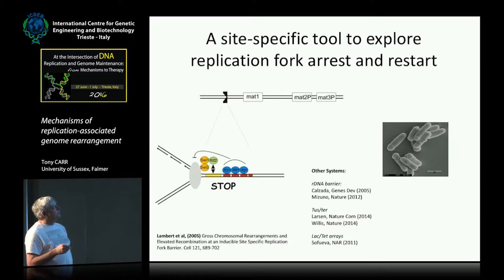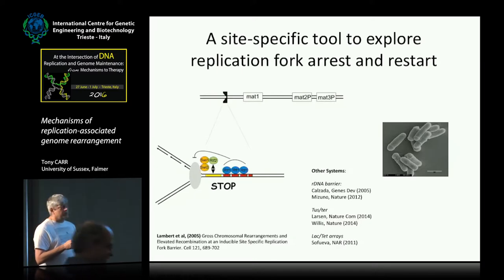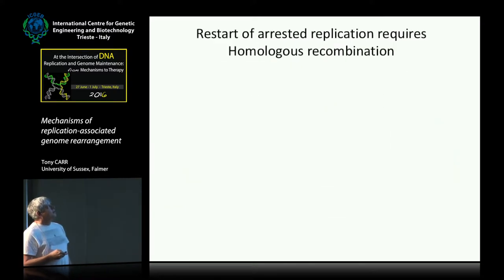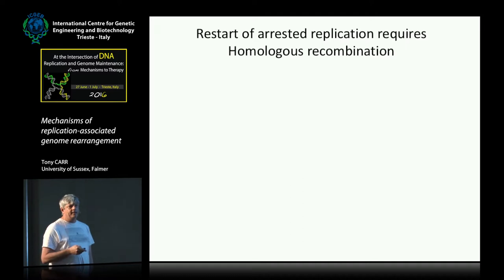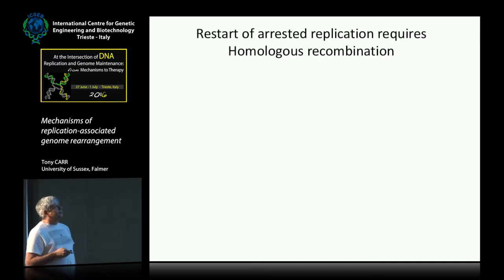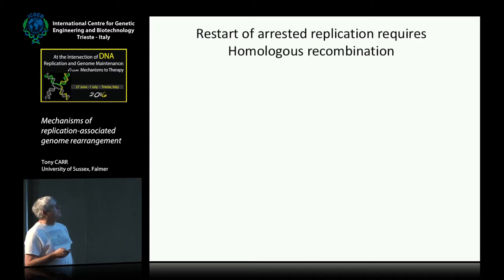We're not interested in mating-type switching, so we wanted to move this sequence to another place in the genome and then ask what happened to the cells if they couldn't replicate a piece of DNA. We've done a lot of characterisation — I'll just run you through a few bits and pieces I think are interesting and important.